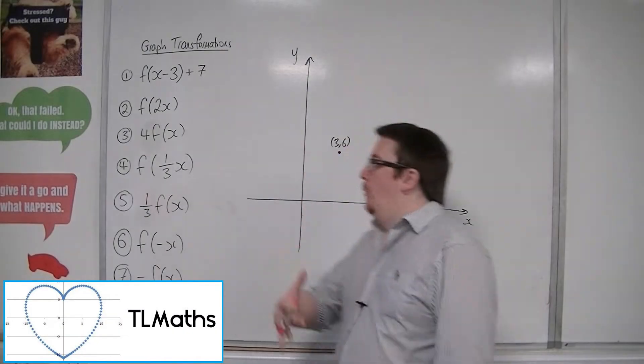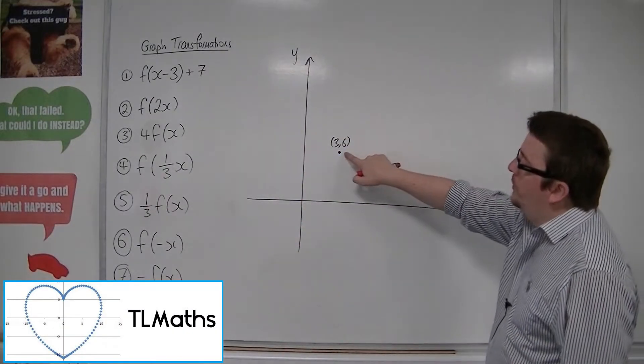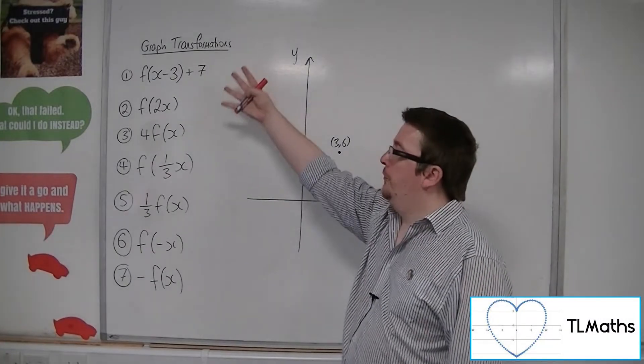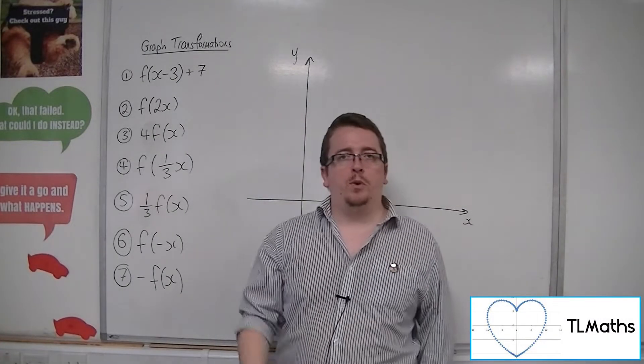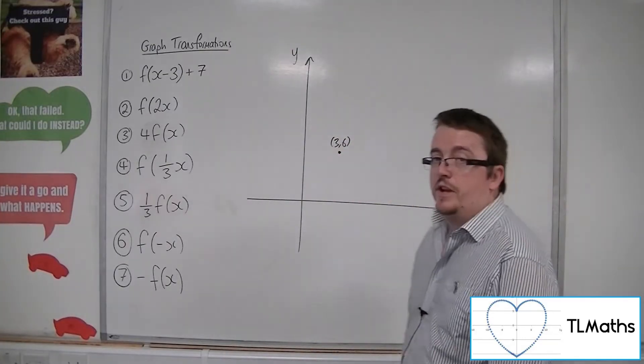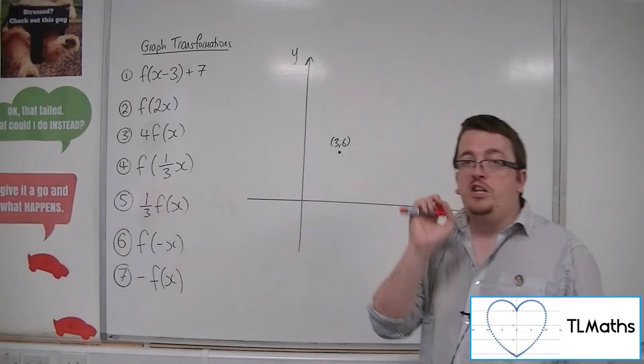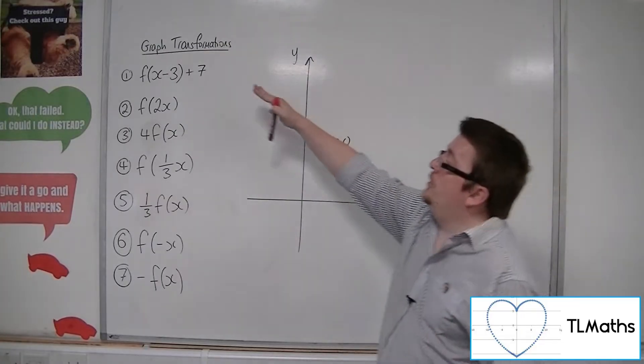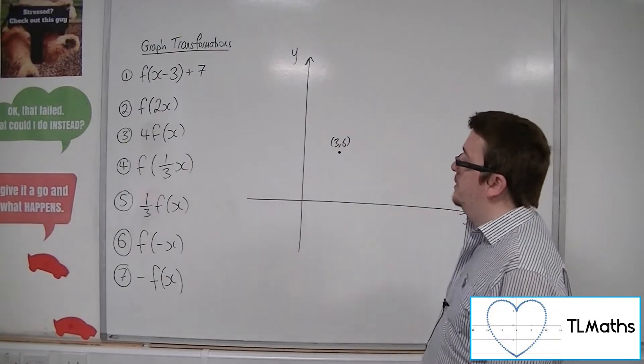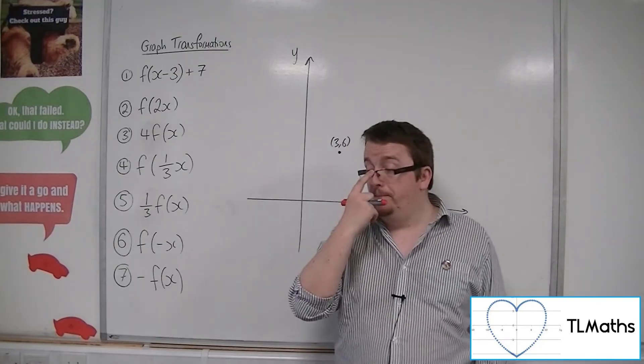So in this video, what we've got is a coordinate, or a pair of coordinates, 3, 6, and we have some transformations that I'm going to apply to it. And really what I want to know is, where is this point going to move to? What are going to be the new coordinates after each of these transformations? Always going back and starting with the original ones there.